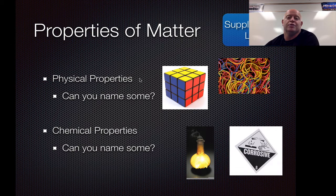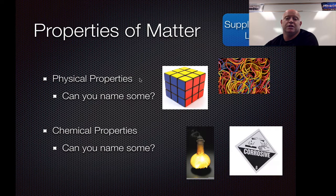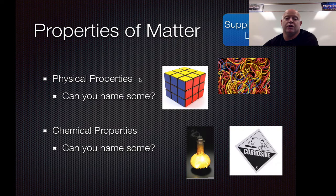Ultimately, if you can determine the property without messing with it, without changing it chemically, it's a physical property. So if you want to know how hard something is, we have tools to measure hardness. When we're done measuring it, we may have put a dent in it, but we never changed the chemical. If you want to know what color it is, we just look at it and say, oh look, it's blue.